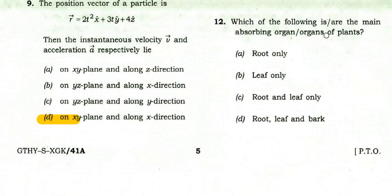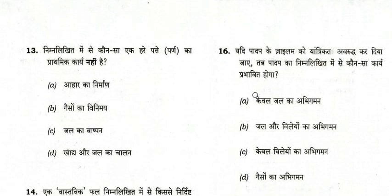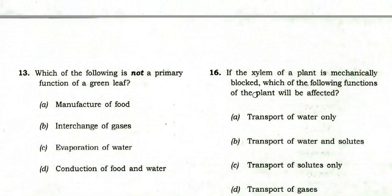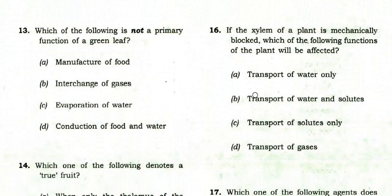Which are the following main absorbing organs of plants? The right option is root and leaf only — bark is not an absorbing organ. Which of the following is not a primary function of a green leaf? The right option is conduction of food and water.